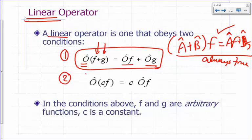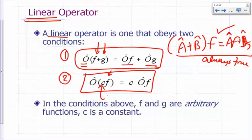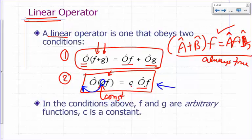The other condition that must be satisfied: if I have an operator operating on a function that is multiplied by a constant C, it should be equal to the same result if I just applied the operator on F and multiplied it by the constant. In other words, I should be able to pull that constant out of the operator. And again, this one is not always true.